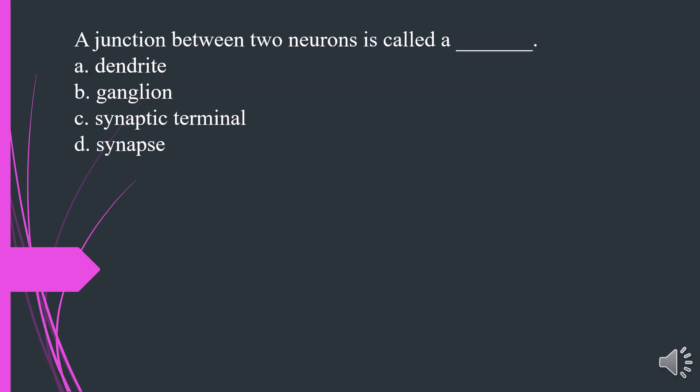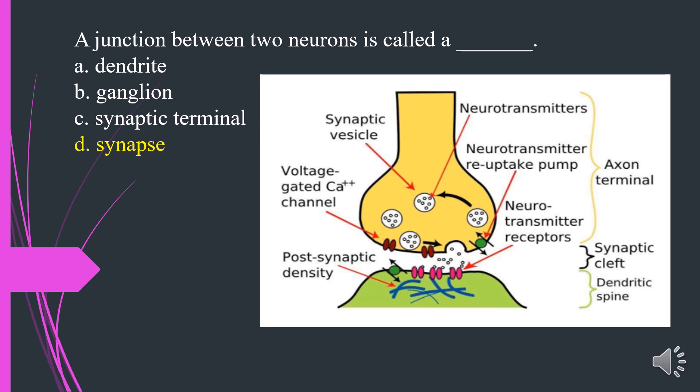A junction between two neurons is called what? A. Dendrite. B. Ganglion. C. Synaptic terminal. D. Synapse. The answer is D. Synapse.